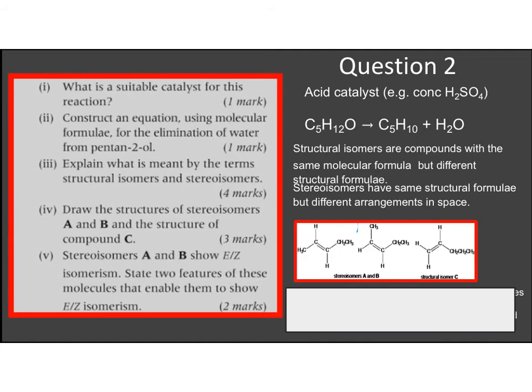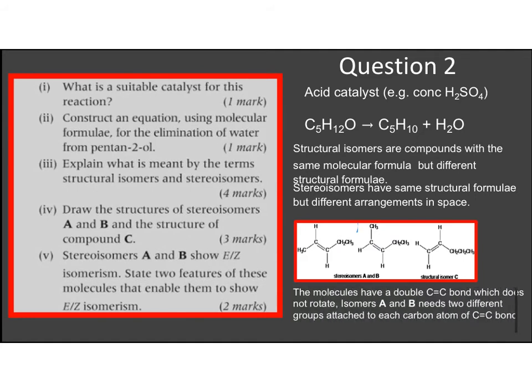And so what feature allows A and B to show stereoisomerism? Well, you need of course your double bond which does not allow free rotation about it. And also A and B have different groups on each of the carbon atoms. So if we look at that carbon atom there, it's got an H and a methyl group. And on that carbon atom, it's got an H and an ethyl group. So both these have different groups.